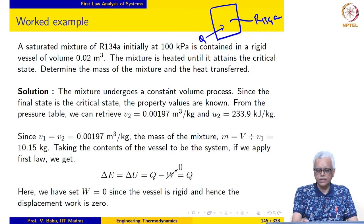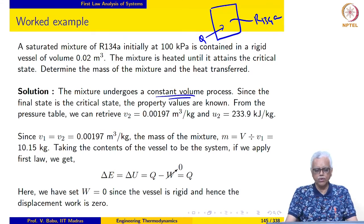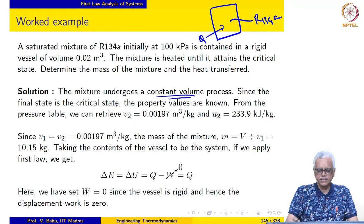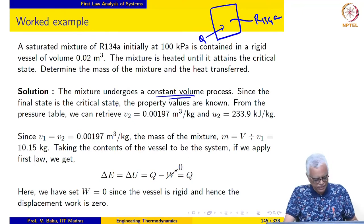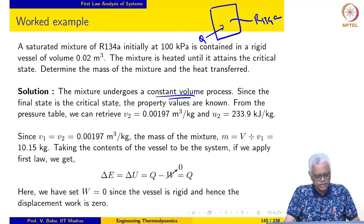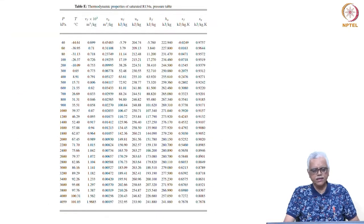As we can see, this vessel is rigid, so this undergoes a constant volume process. The final state is the critical state, which means the property values are actually known. Let us see how this comes about.